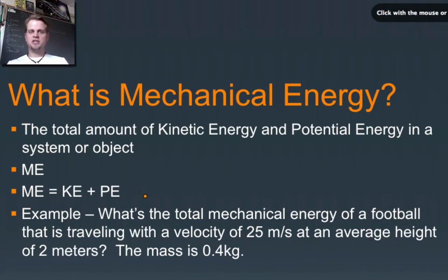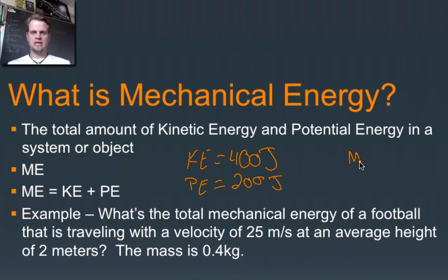It's actually not that hard. So let's say something is moving and it has a kinetic energy of 400 joules, and it's above the ground a little bit and it has a potential energy of 200 joules. The total mechanical energy would be 600 joules. Now I'm not going to give them to you that simple.